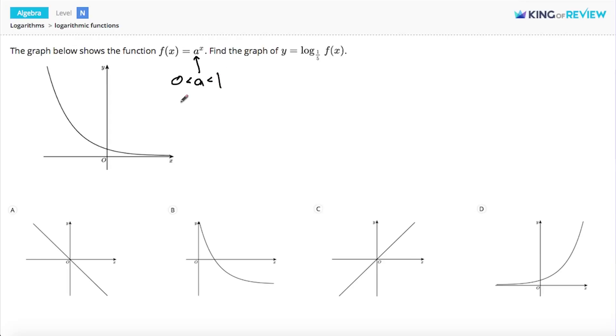We're not sure what it is exactly, but since the graph is decreasing, a has to be some number between 0 and 1. Now we need to figure out what the graph of this new function looks like.